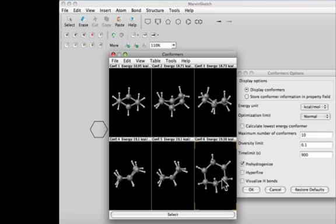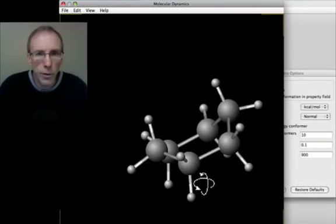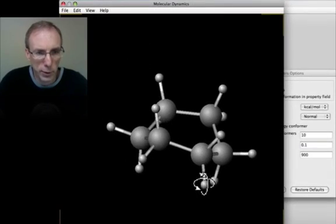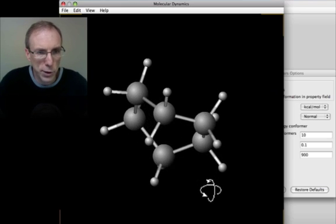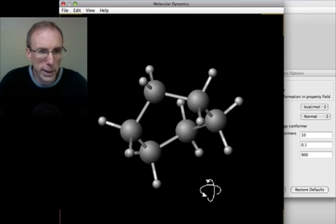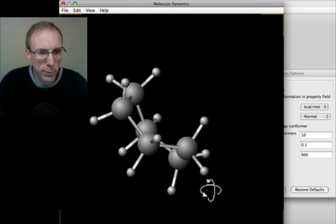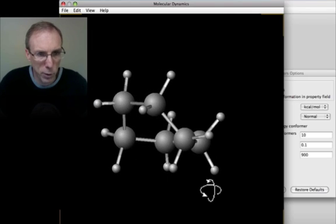Let's use the boat conformation to begin a molecular dynamics trajectory. There are two things to notice in the case of cyclohexane from these dynamics simulations. The first is that the molecule always remains in the boat or the twist boat form over the time scale of this molecular dynamics run.